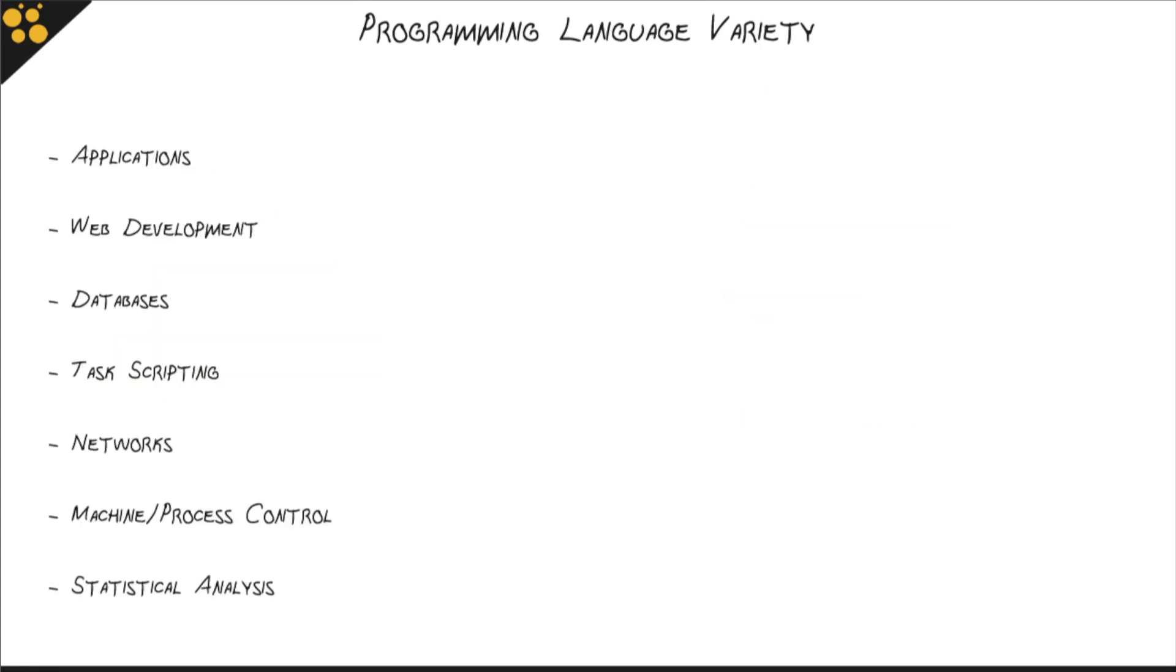So with that in mind, let's take a look at some of the programming languages that we might use across these different categories. In application programming, remember these are compiled applications. You're going to run into just about any programming language can be used, but some of the more popular modern alternatives are C# and Java.